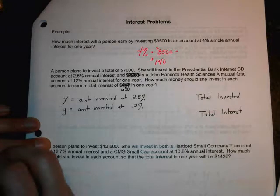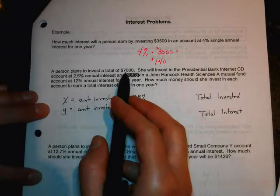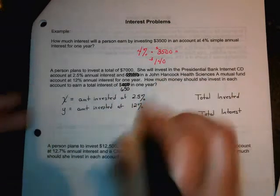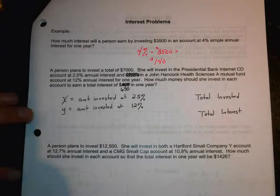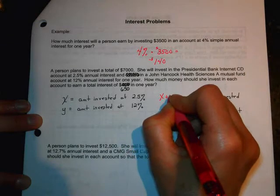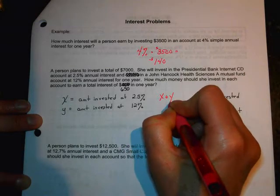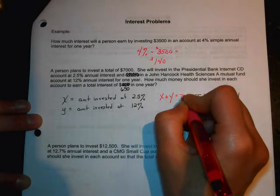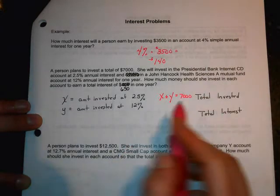I'm going to let X equal the amount invested at 2.5%. And I'm going to let Y equal the amount invested at 12%. So, we've got two types of equations then. We have a totals invested and a totals interest.